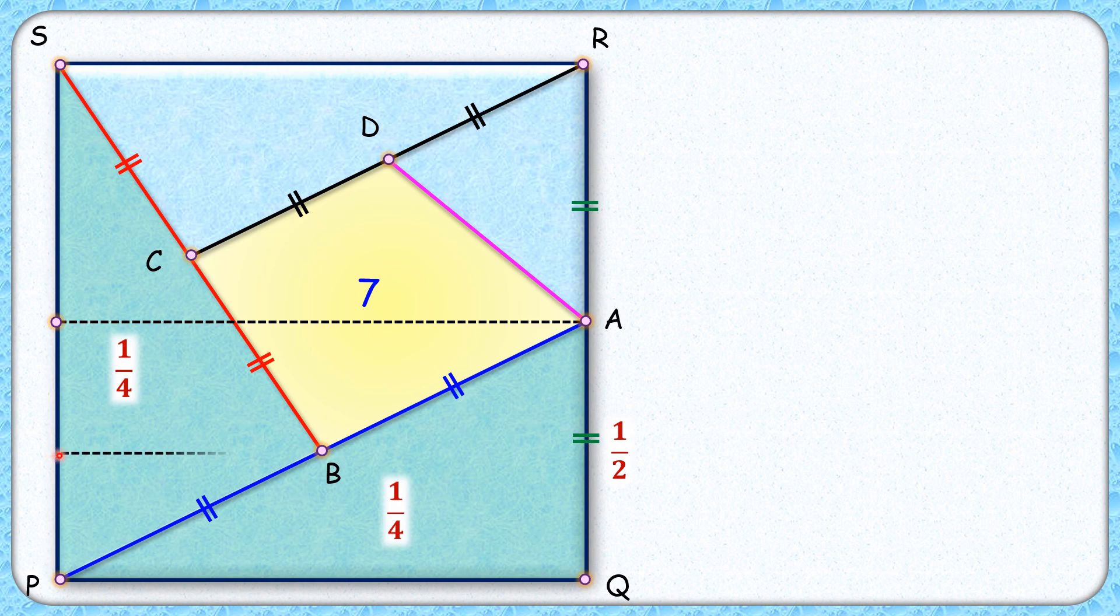So if I draw a line parallel passing through B, it will again divide it into two equal areas. So area of this bottom rectangle is one-fourth the area of the square, and the area of this top rectangle will be three-fourths the area of the square.